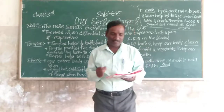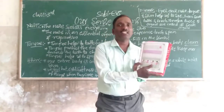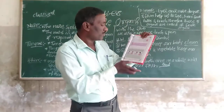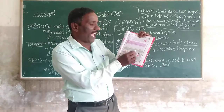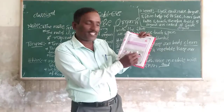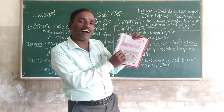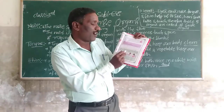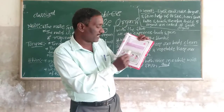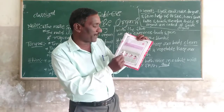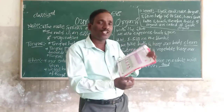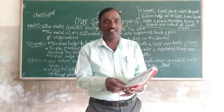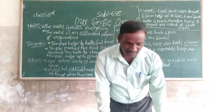Here is an activity. Look at the pictures and identify whether the activities shown are right or wrong. Write 'right' or 'wrong' below each picture, and think about why it is wrong. It is a simple activity.